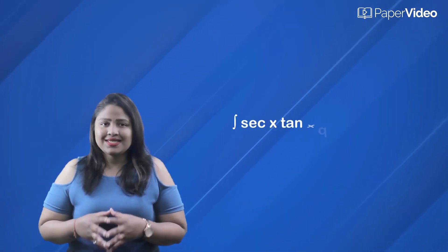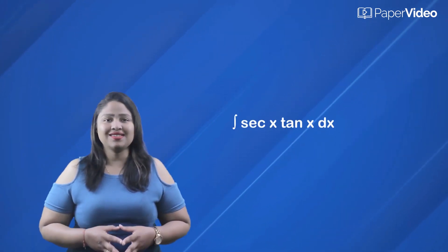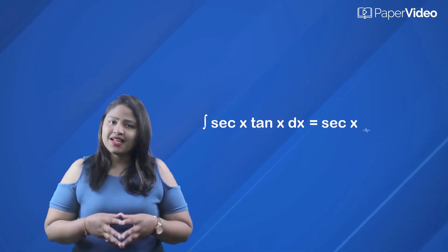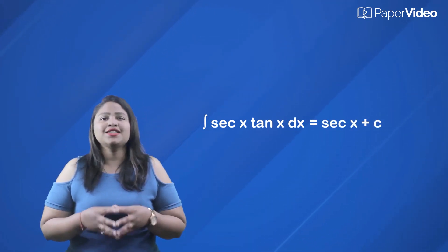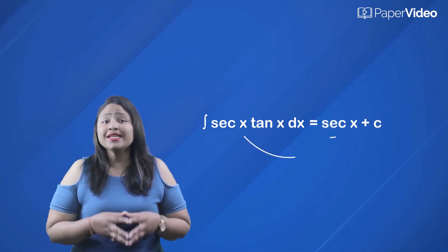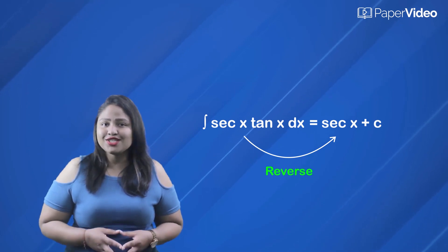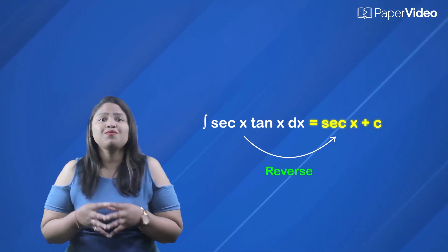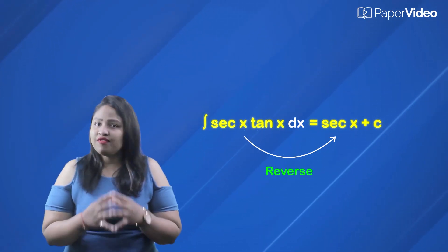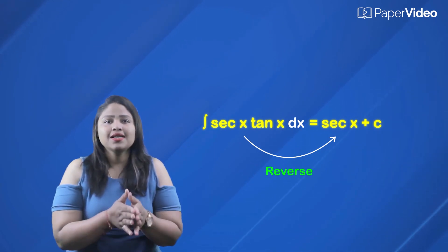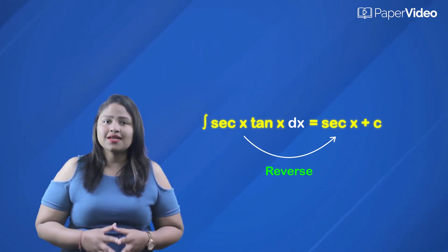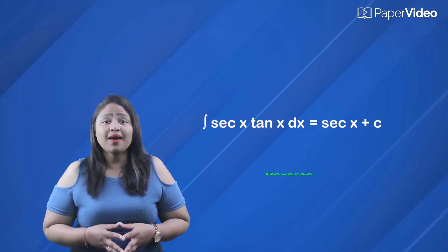First, we have the integral of sec x tan x dx. This integral is equal to sec x plus c. As you know, integration is basically the reverse of differentiation, so if we differentiate sec x plus c,